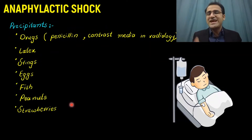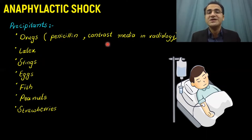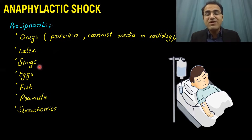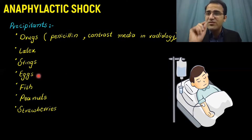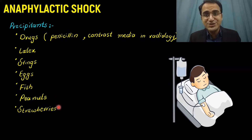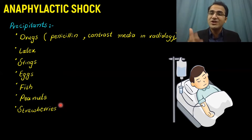What precipitates an anaphylactic shock? Usually patients are allergic to drugs like penicillin, or contrast media in radiology. Some people are allergic to latex. Some patients get an anaphylactic reaction after a sting bite of a bee, or some people are allergic to sulfur present in eggs. A few people are allergic to fish, peanuts, and even strawberries. Anaphylactic reaction can be precipitated by any of these foreign substances to which the body is allergic.